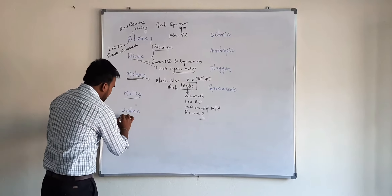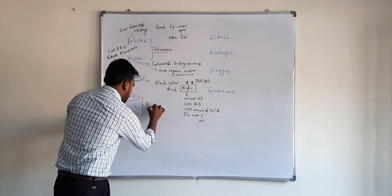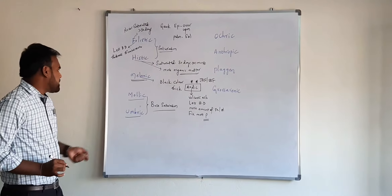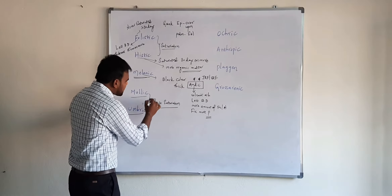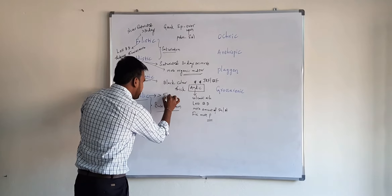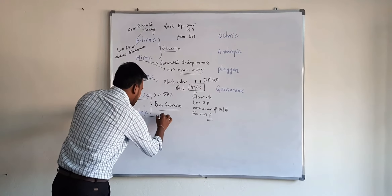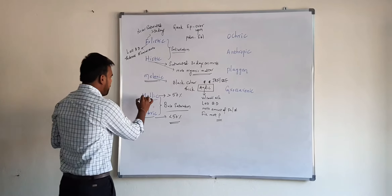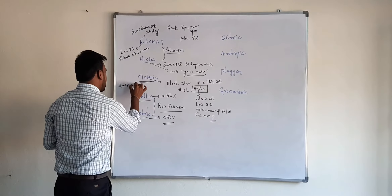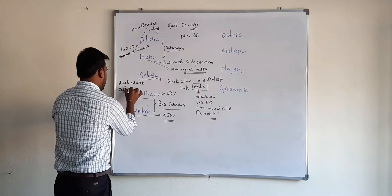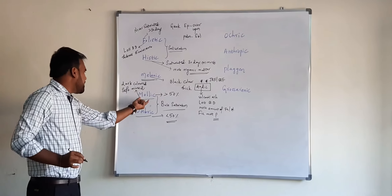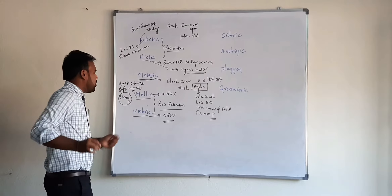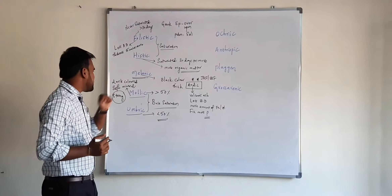Coming to mollic epipedan — remember the main difference between mollic and umbric epipedan is base saturation. Base saturation for mollic epipedan is greater than 50%, and coming to umbric epipedan it is less than 50%. Another important feature of mollic epipedan is that it is a dark colored, soft mineral horizon with strong structure. Which of the following epipedans has strong structure? That is mollic epipedan.